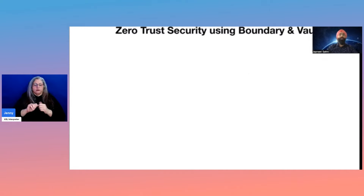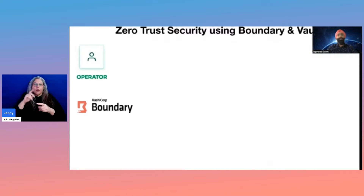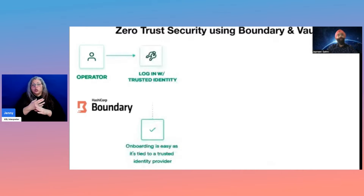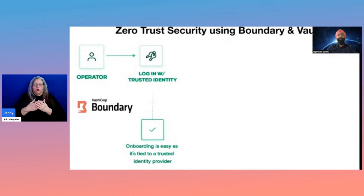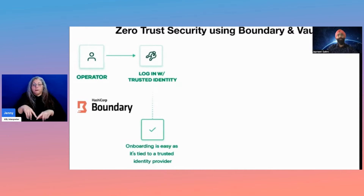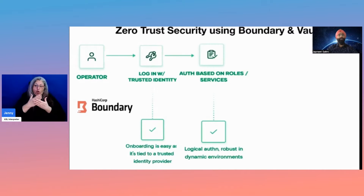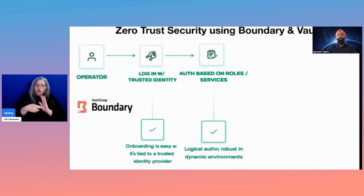This is where Boundary and Vault integration comes to the rescue. With Boundary, every user logs in through an identity provider. Once authenticated using this IDP, you prove that you are a valid user. When it comes to onboarding and offboarding users, it's just about adding or removing them from the IDP. Once the user has authenticated, there's going to be authorization based on a certain set of roles and permissions, really driving role-based access control.